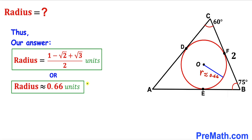Thus the radius turns out to be (1 − √2 + √3) / 2 units, approximately equal to 0.66 units. Thanks for watching and please subscribe to my channel for more exciting videos.